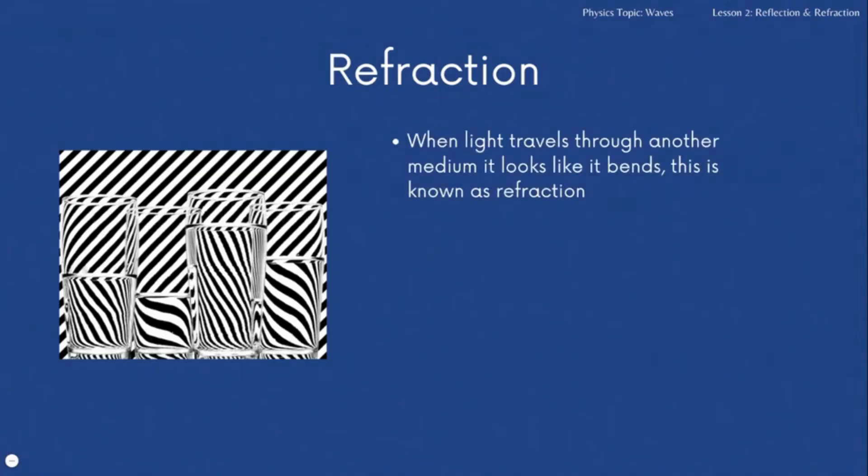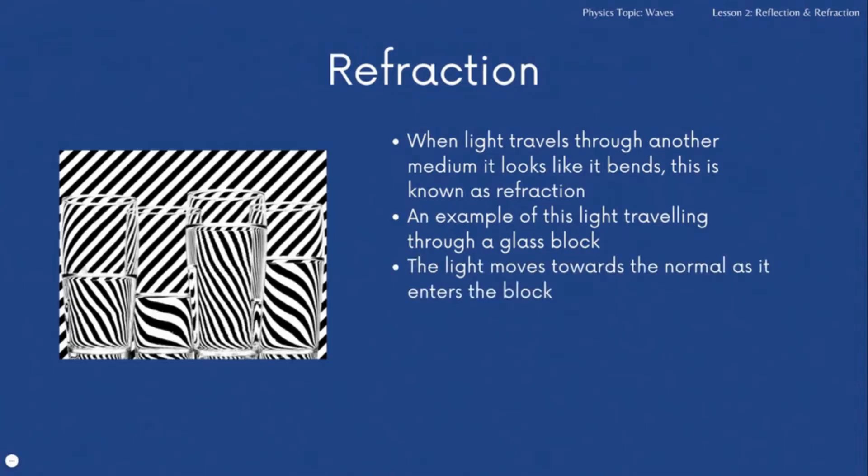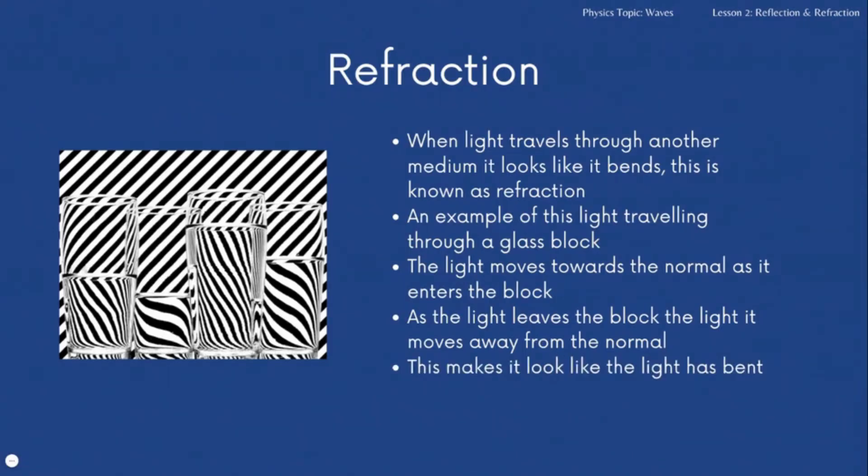So what happens? The light travels through another medium, in this case it could be glass, it could be water, and it looks like the light is bending. A glass block is a really good one to do, and is an experiment you would do at school as well. Basically the light moves towards the normal as it enters the block, then when it leaves the block it moves away from the normal. This is what gives the impression that the light has bent, but actually the angle of the light ray has changed and it's done that as it's hit another medium.